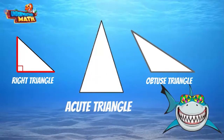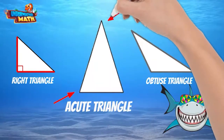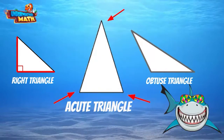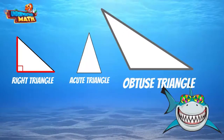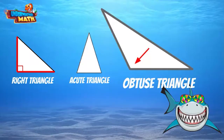Next, let's talk about acute triangles. These triangles are characterized by having three angles that are less than 90 degrees. Angles less than 90 degrees are called acute angles. All three angles in the triangle must be less than 90 degrees to be classified as an acute triangle. Finally, we have obtuse triangles — these triangles have one angle measurement that is greater than 90 degrees.